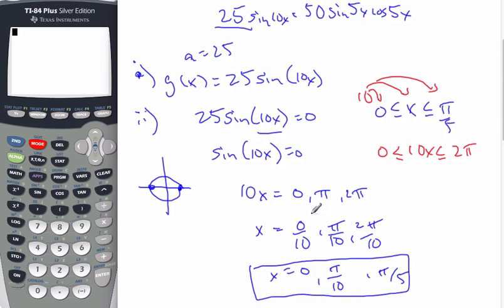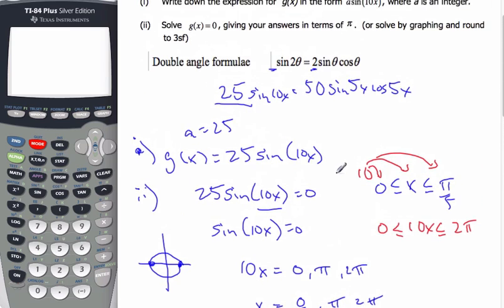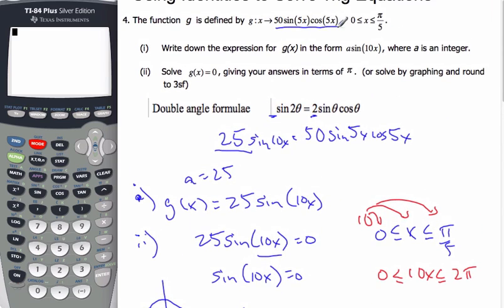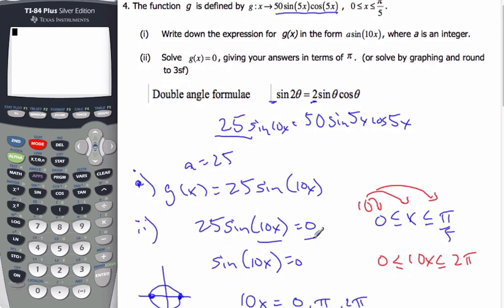Okay. So, in doing this problem, we use double angle to rewrite g of x. And then we solve in terms of pi by setting the function equal to zero.